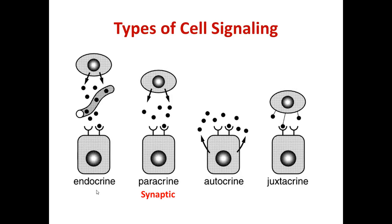Paracrine cell signaling is one step lower — this is where a cell signals to cells in its local neighborhood. Synaptic cell signaling is a subtype of paracrine signaling in some books; it is paracrine signaling that occurs across a synapse between neurons. In both of these cases the signal diffuses across a distance to reach a nearby cell.